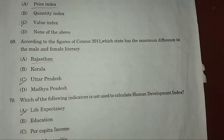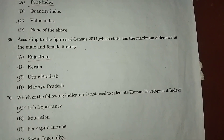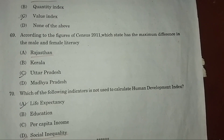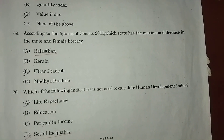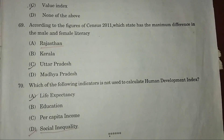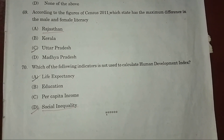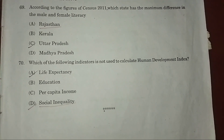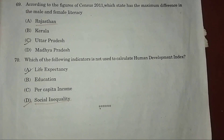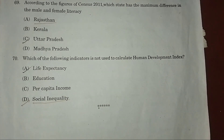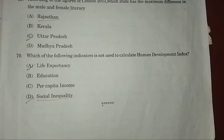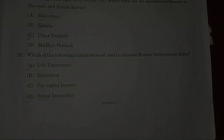Question 69: According to the Census 2011, which state has the maximum difference in male-female literacy? Answer: A — Rajasthan. Question 70: Which of the following indicators is not used to calculate the Human Development Index? Answer: D — social inequality.